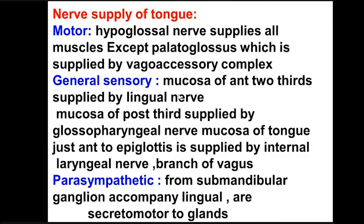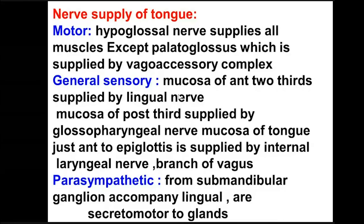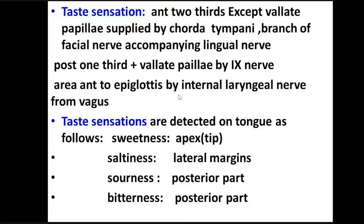So the glossopharyngeal supplies the posterior one-third for both general sensation and taste. The anterior two-thirds: general sensation via the lingual nerve, and taste via the chorda tympani (a branch of the facial nerve) which joins the lingual nerve. For the glands, the parasympathetic supply is from the submandibular parasympathetic ganglion, which accompanies the lingual nerve. Taste sensations detected on the tongue include sweetness, which is felt most at the apex — the tip of the tongue. The circumvallate papillae taste is supplied by the glossopharyngeal nerve, and the area anterior to the epiglottis by the internal laryngeal nerve of the vagus.